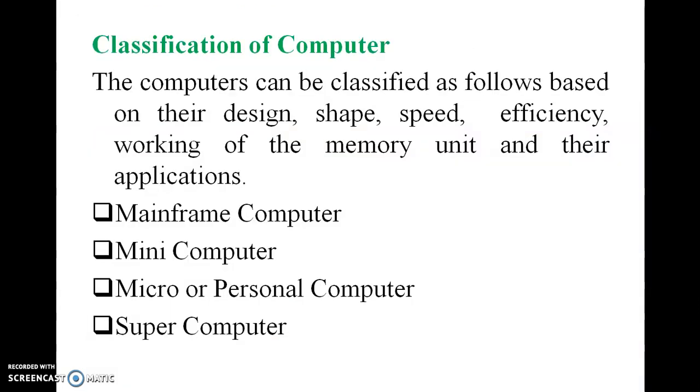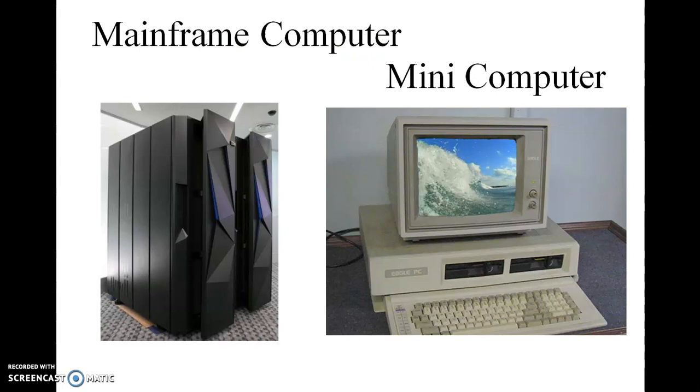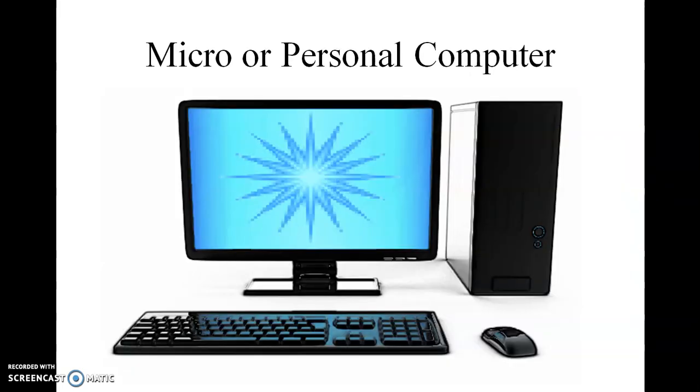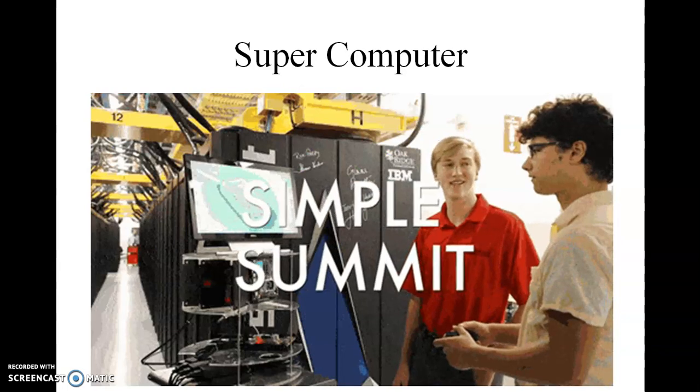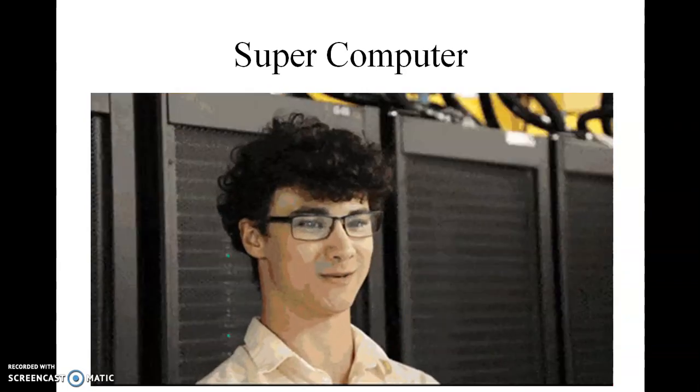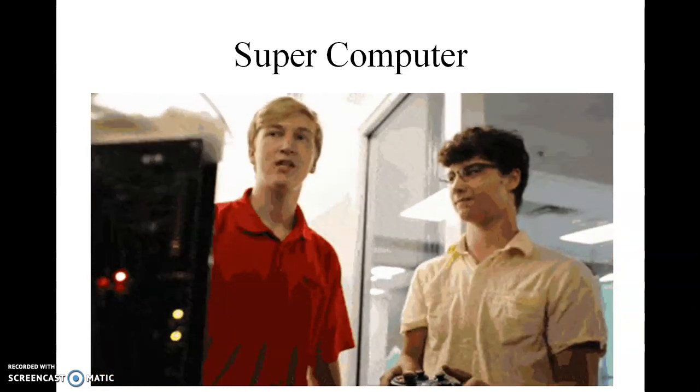Classification of computers. Computers can be classified based on design, space, speed, efficiency, working memory. They are classified into four types: first one is mainframe computers, another one is micro or personal computers that we normally use, another one is supercomputer. Nowadays supercomputers are very famous; even IBM is using these supercomputers.